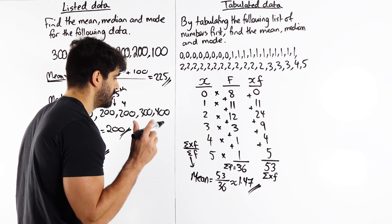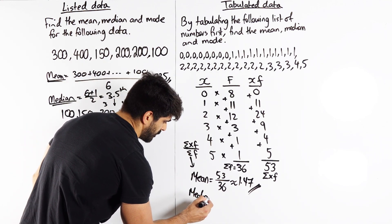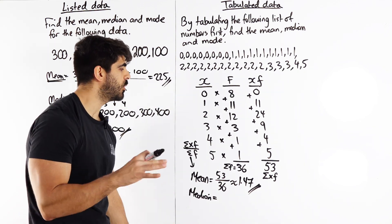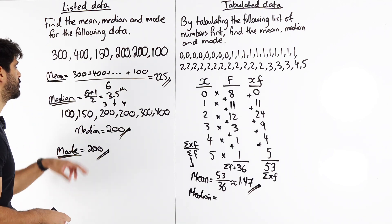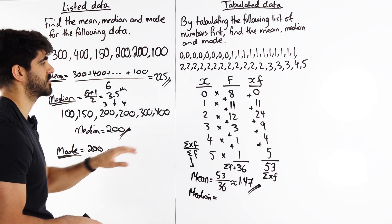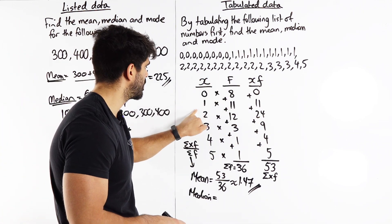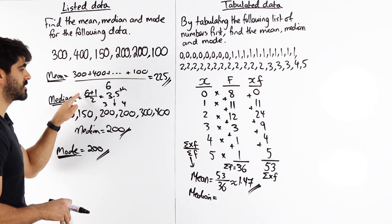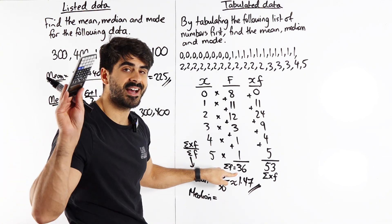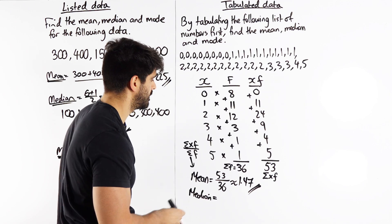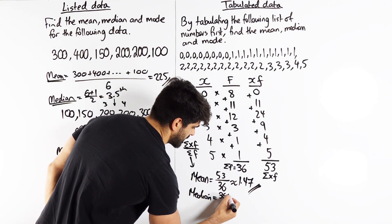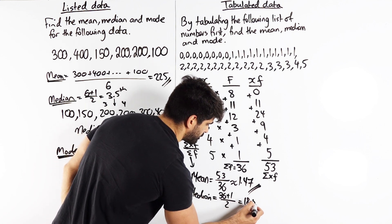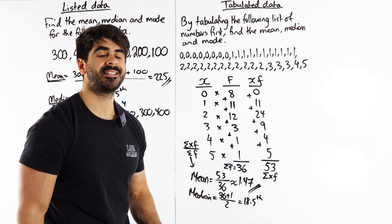The next thing is the median. For the median, we first need to locate where the middle number is. For discrete data, we use n plus 1 divided by 2. Remember, all tabulated data with single values in the first column is discrete data. We know there are 36 numbers, so we do 36 plus 1 divided by 2, which is 18.5. We're looking for the 18.5th value.